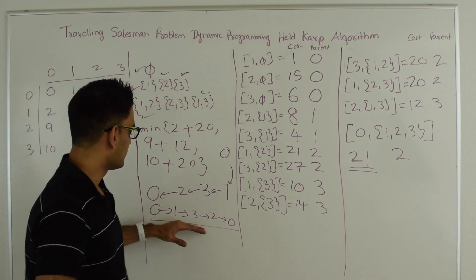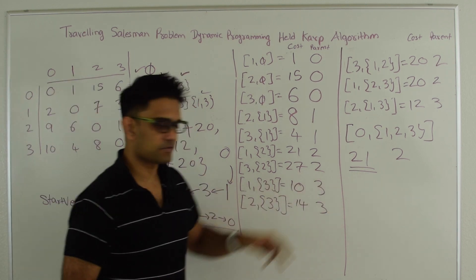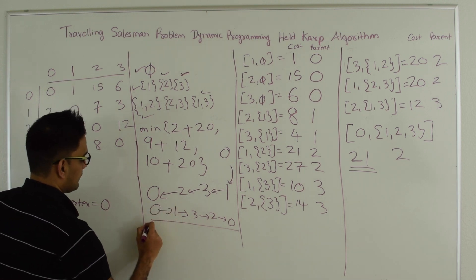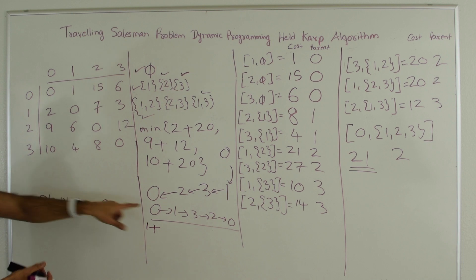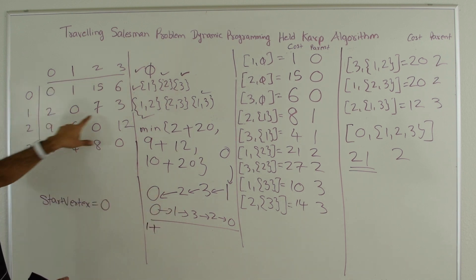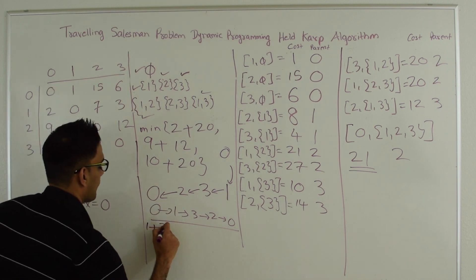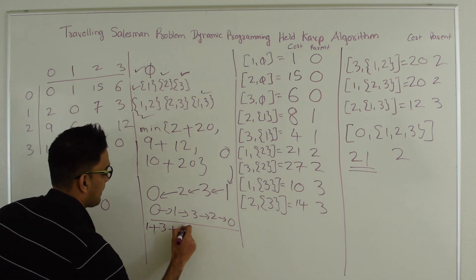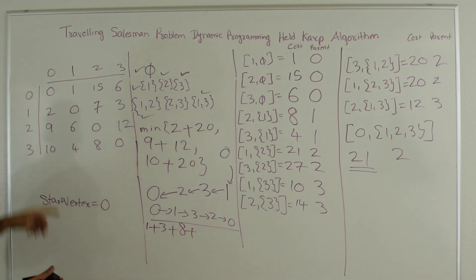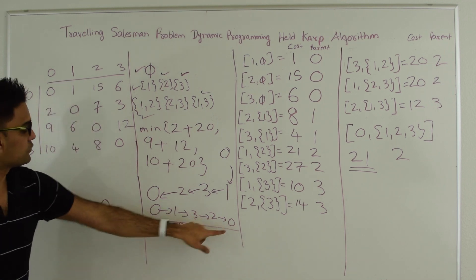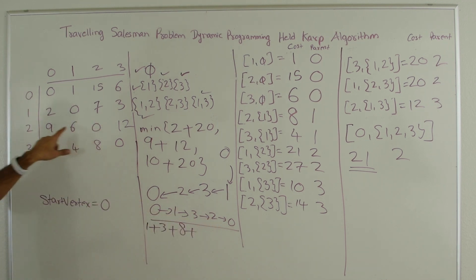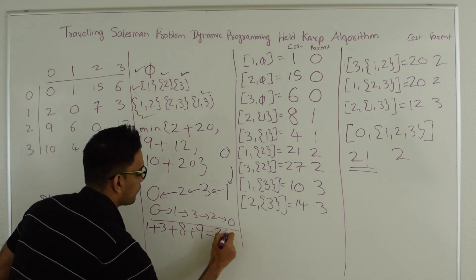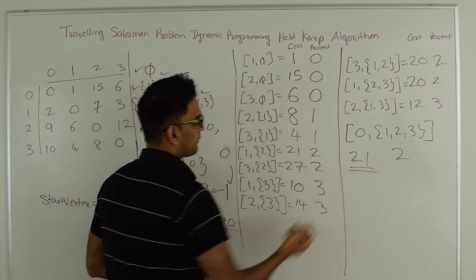Let's quickly confirm the cost: 0 to 1 is 1, plus 1 to 3 is 3, plus 3 to 2 is 8, plus 2 to 0 is 9 — that's 1 + 3 + 8 + 9 = 21, which matches the minimum cost of our tour.